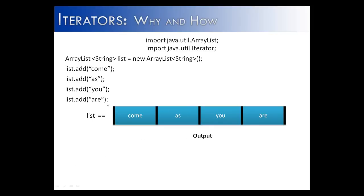What I've done here is I've created an ArrayList with string values, so come, as, you, are. And then I create my iterator, and then what I want to do is here.next, I want to say is equal to the string. So I want come to be stored in string. But the problem is that is going to result in an error.